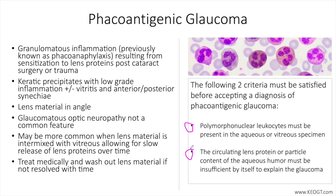From a treatment standpoint, phacoantigenic glaucoma is treated with topical therapy to lower intraocular pressure, as well as steroids to control inflammation. While it is possible for the disease process to resolve with topical therapy alone, removal of the lens protein, when significant, will both speed up recovery as well as result in definitive treatment. Miotics like pilocarpine should be avoided as they might increase inflammation and formation of synechiae. Cycloplegics like atropine can be used to assist enhancing ocular comfort, breaking posterior synechiae, and/or to avoid formation of new synechiae while other treatments are initiated to control pressure and inflammation.